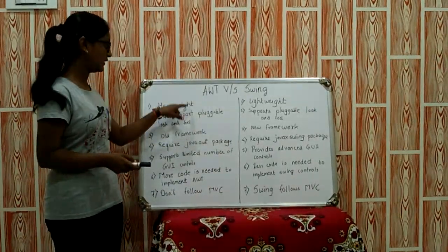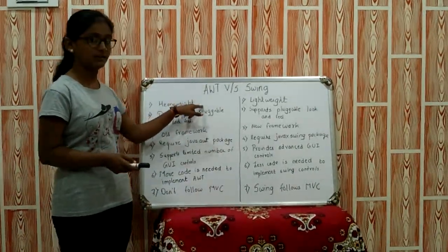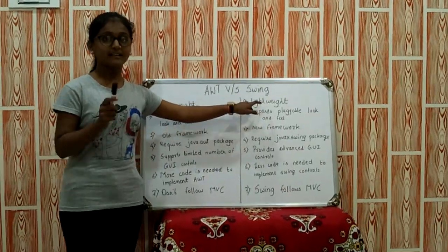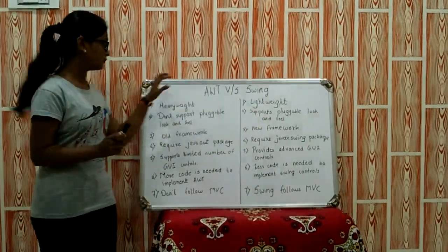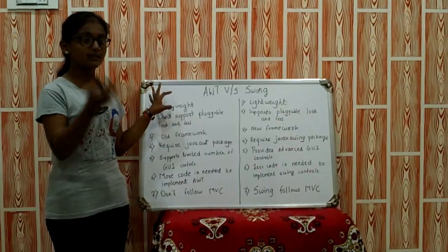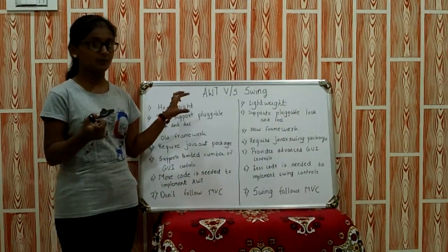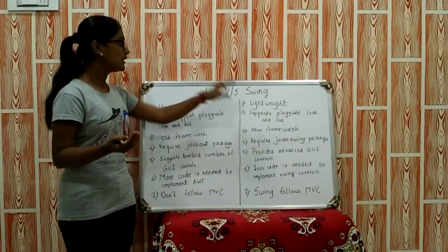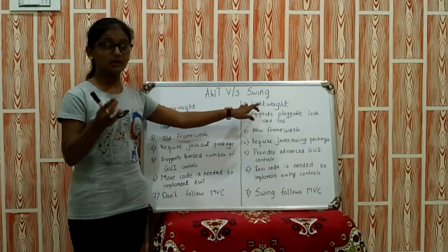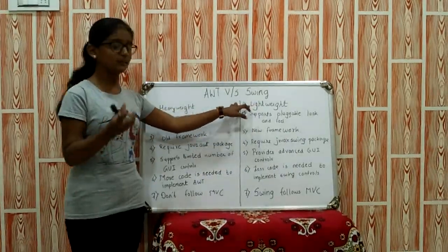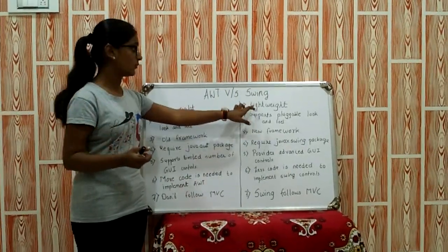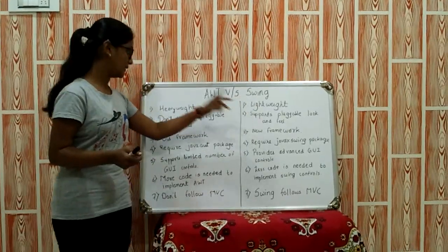The components under AWT are heavyweight, while in Swing they are lightweight. In the first video I explained why AWT is heavyweight — because whatever memory is required for the component is more. In Swing, whatever components are used, the memory required is less, so the components are lightweight.